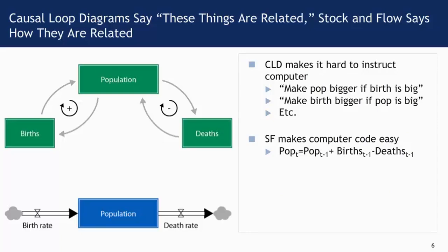Causal loop diagrams make it hard to instruct the computer. If all one has is the diagram at the top, one has a general notion that population should be bigger if birth is big, a general notion that birth should be bigger if the population is big, etc. It's really not quite an equation.